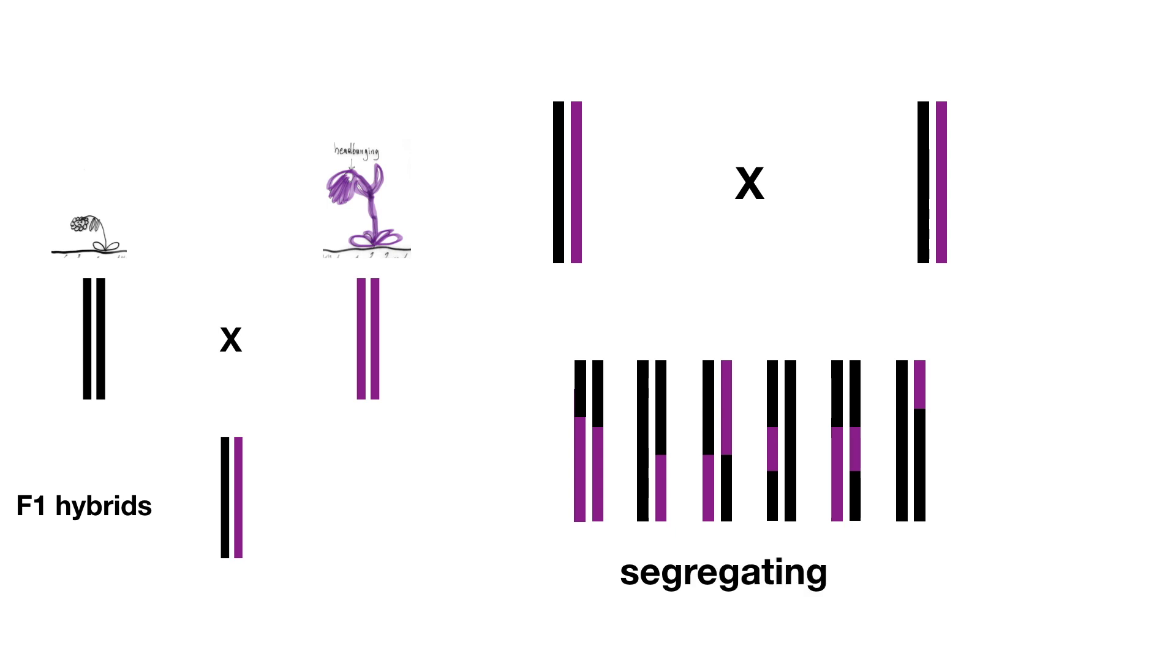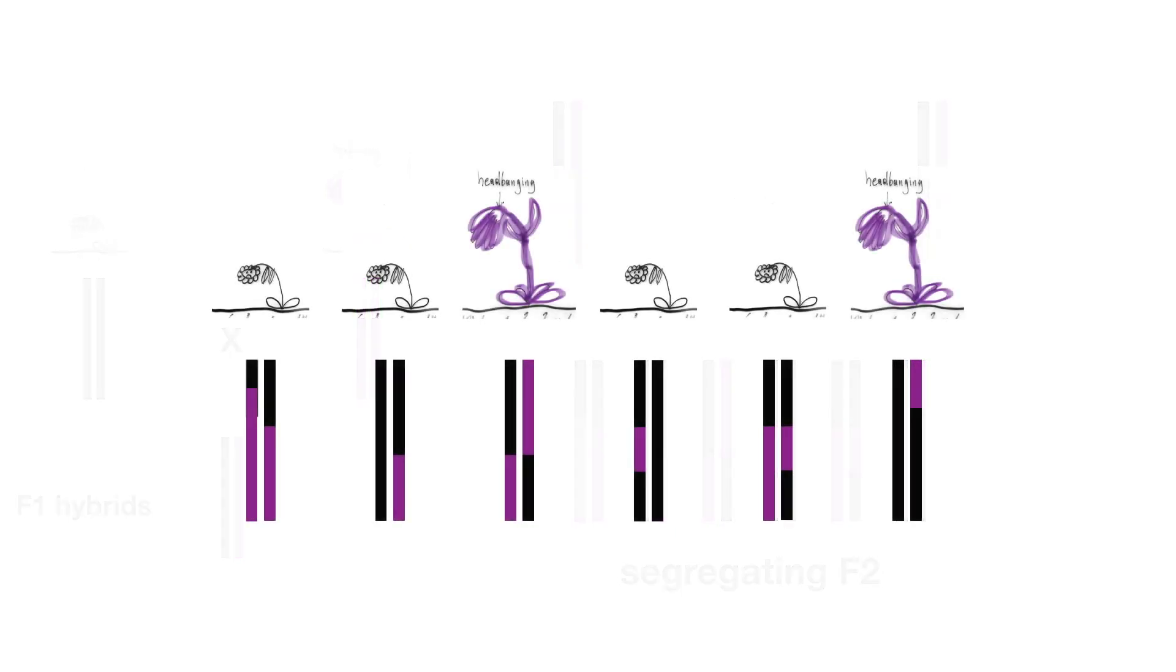We grew those plants with these mixed genomes in our experiment and we measured them. Now we read the genomes of each of these plants to find out which parts of the genome correspond to being happy or unhappy.